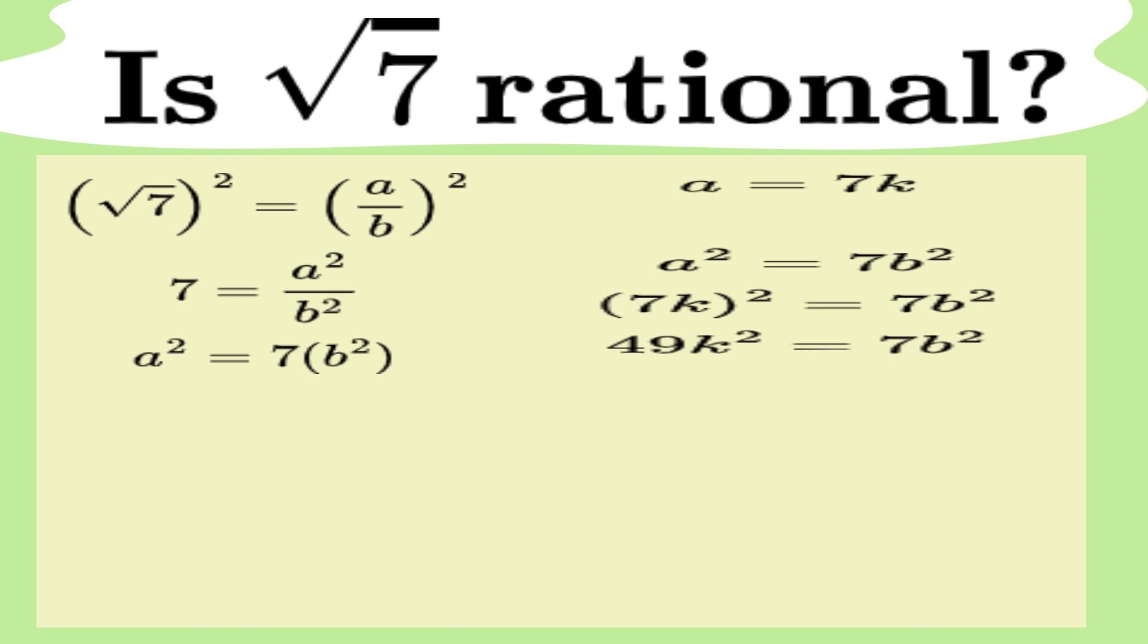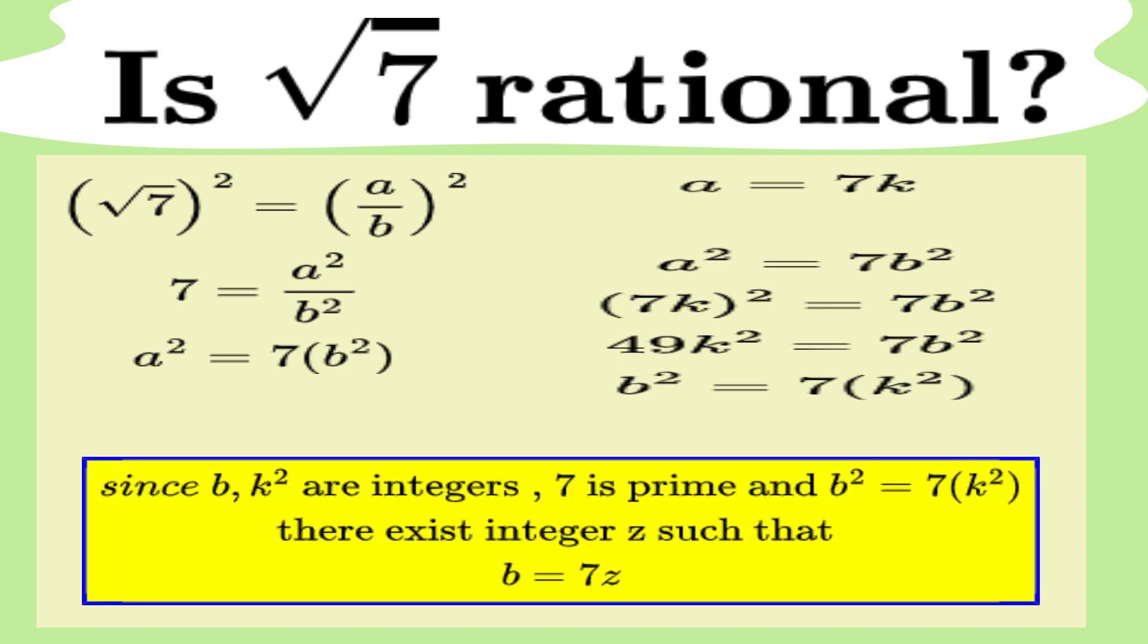Let's simplify that by dividing both sides by 7. This leaves us with 7k squared equals b squared. And now, we can see that b squared is also divisible by 7. By the same logic we used with a, this means b must also be divisible by 7.